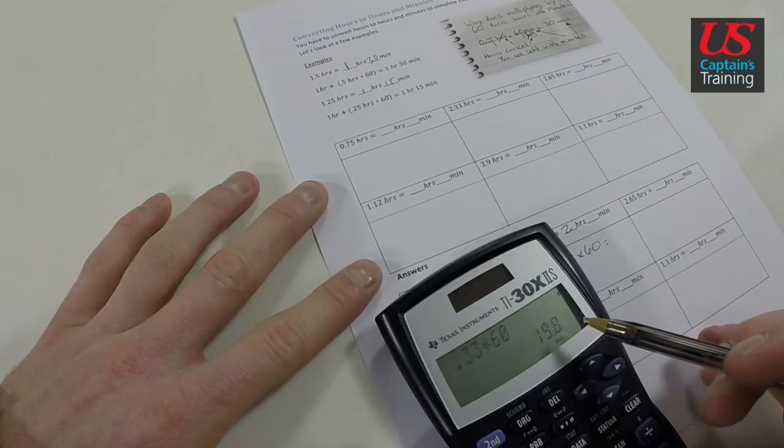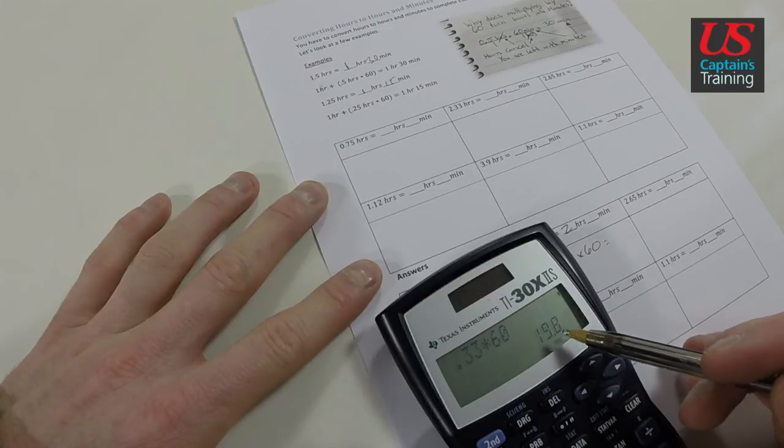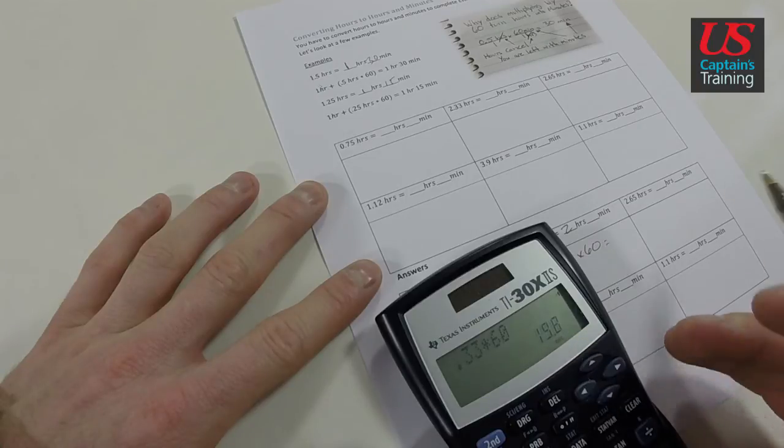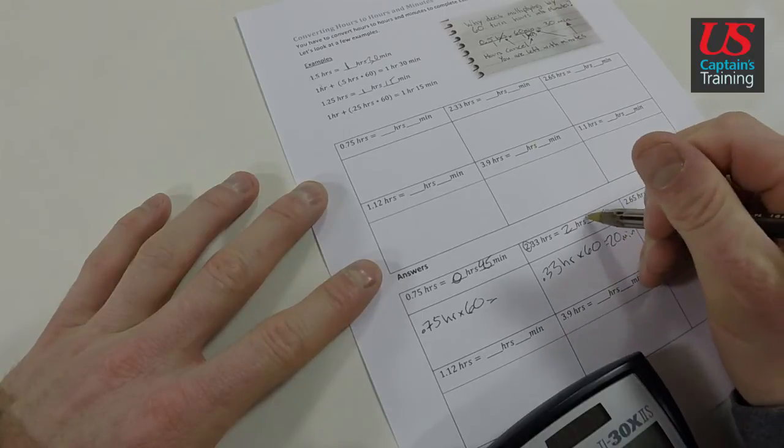19.8 minutes. We round this up. This 0.8 is greater than 0.5, so we round up. Anything 0.5 or greater, round up. If it's less than 0.5, round down. So 19.8 minutes rounds up to 20 minutes.